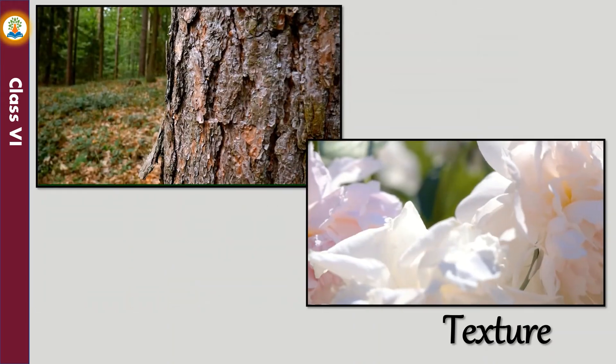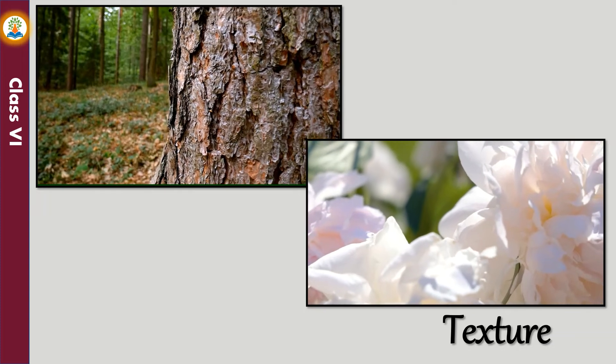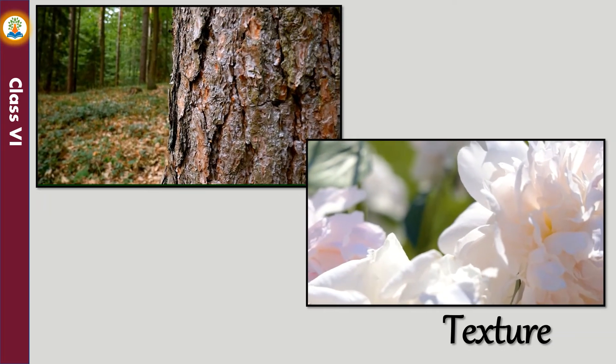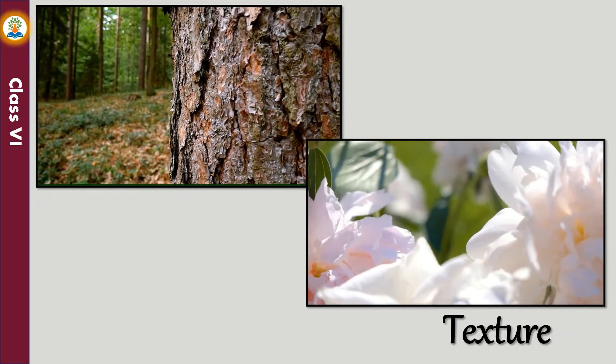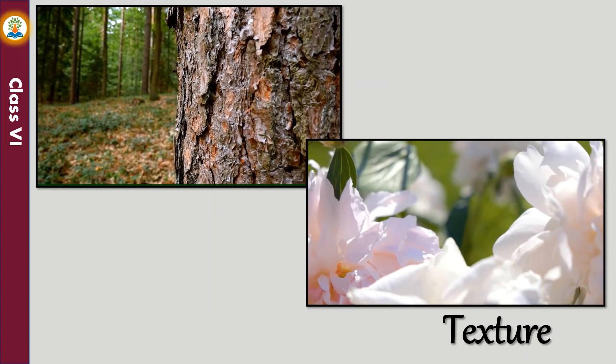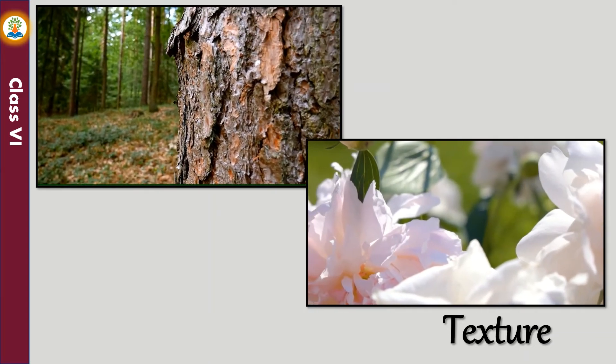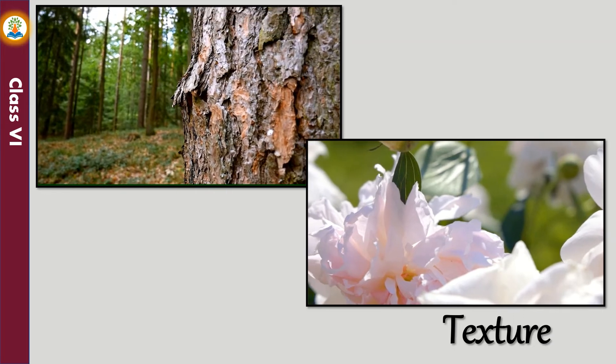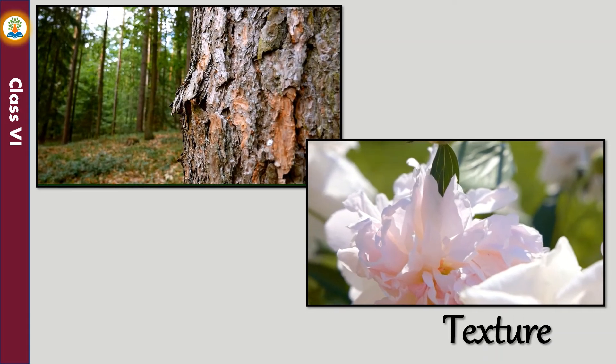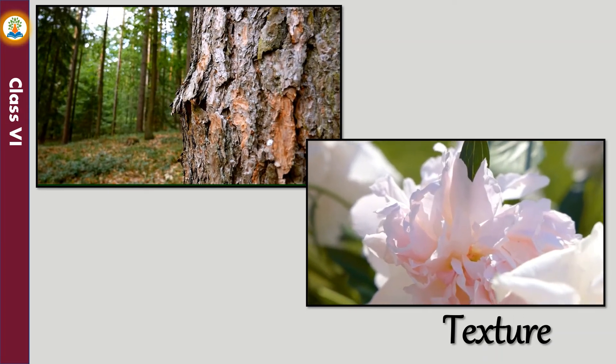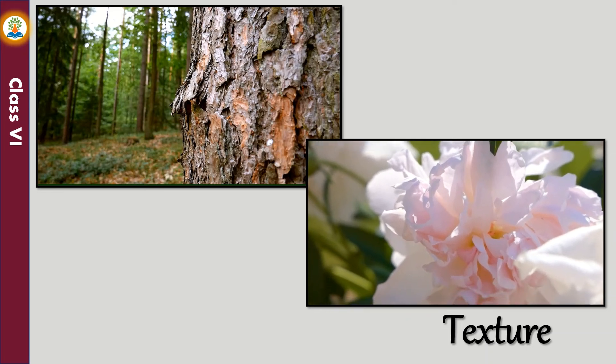The surfaces of flower petals and a glass tumbler are even. They have a smooth texture. All the smooth surfaces have no bumps or ridges and have a plain surface. The surfaces of a tree bark, an unfinished wall, and sandpaper are uneven. They have a rough texture. We can feel bumps and ridges on the surfaces of rough materials.